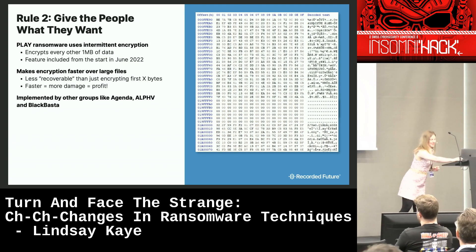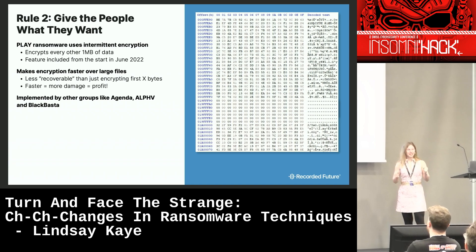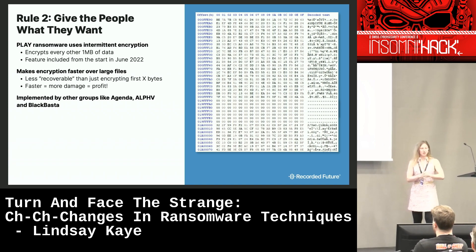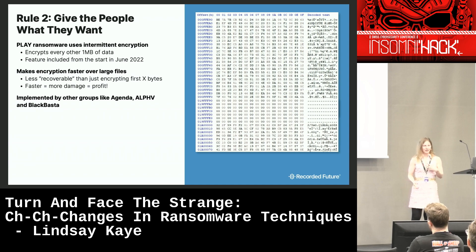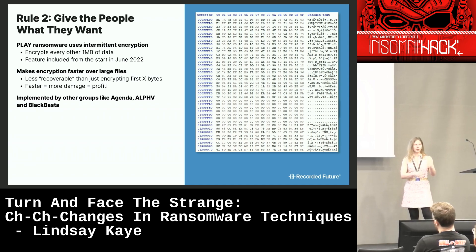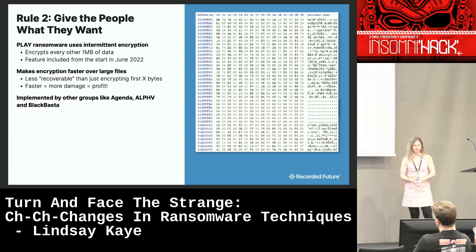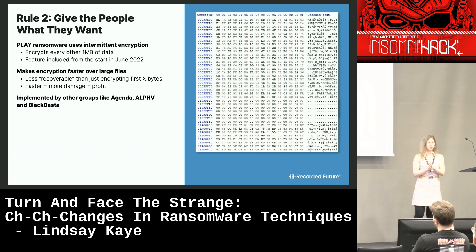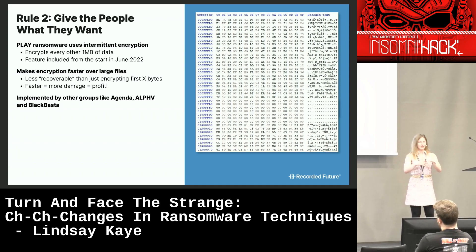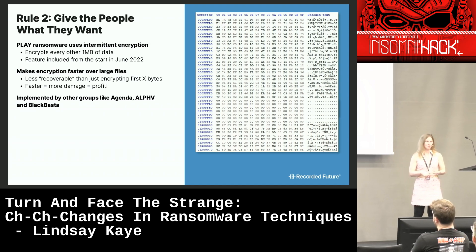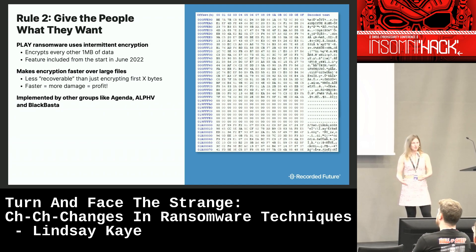If you're a threat actor, give the people what they want. Intermittent encryption is something Play implements — like some other threat actors, they'll encrypt every other one megabyte of data. This was introduced in June 2022, so it's been there from the beginning. The reason you want this is you want to encrypt as much as you can, as fast as you can. The more you can encrypt before somebody figures out what you're doing and stops you, the better — more damage, more likely to pay.